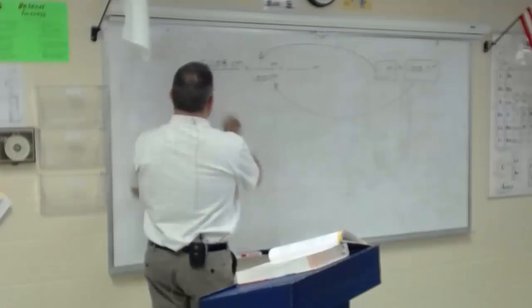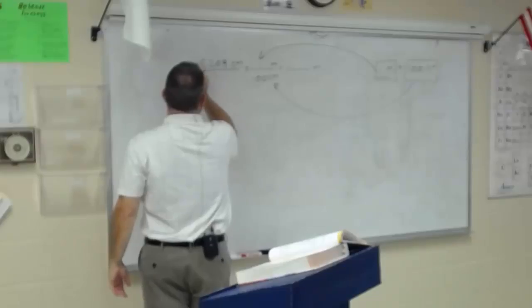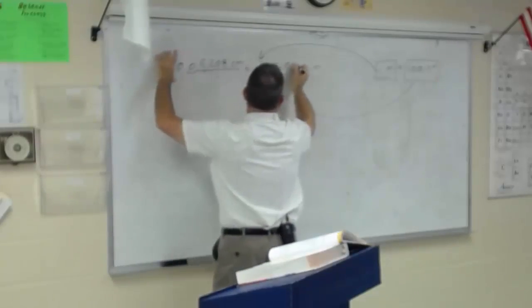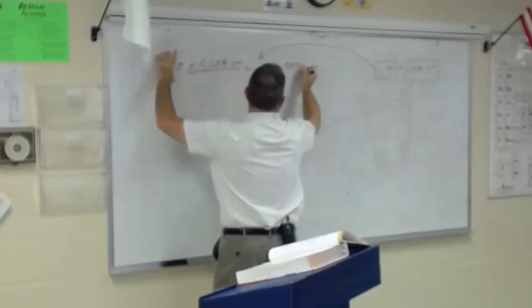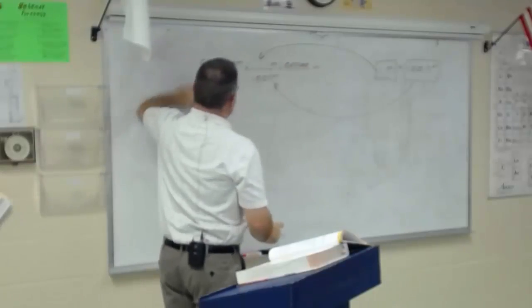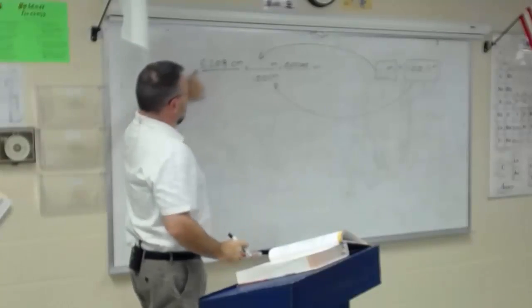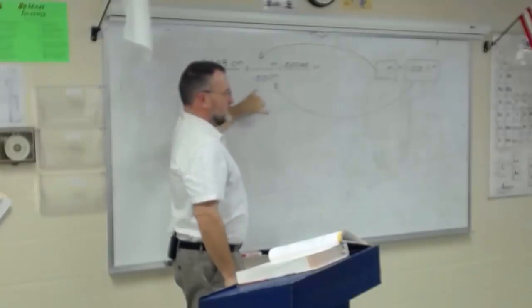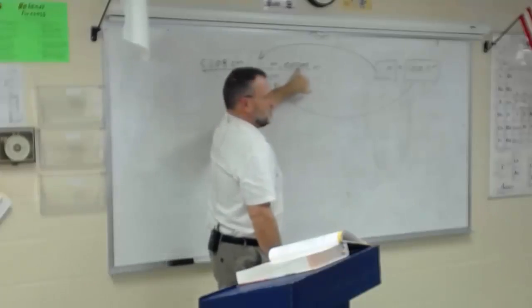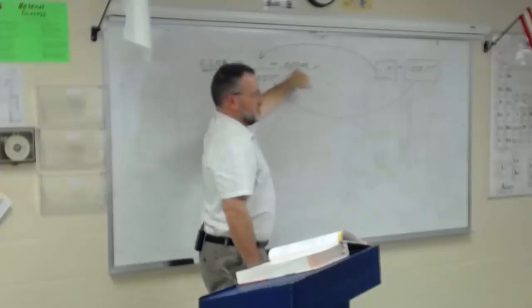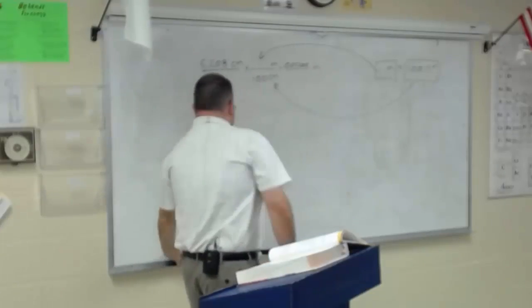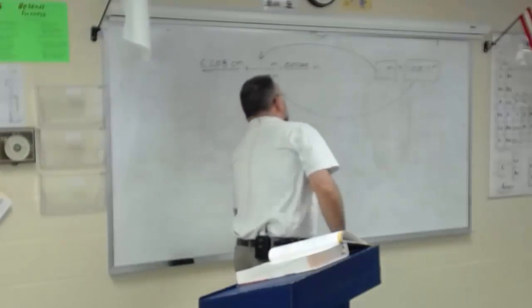Moving the decimal two places to the left — one, two — I get 0.05208 meters. That should make sense: five divided by a hundred is five hundredths, which is what this is. Five in the hundreds place — five divided by a hundred is five hundredths. That's reasonable.